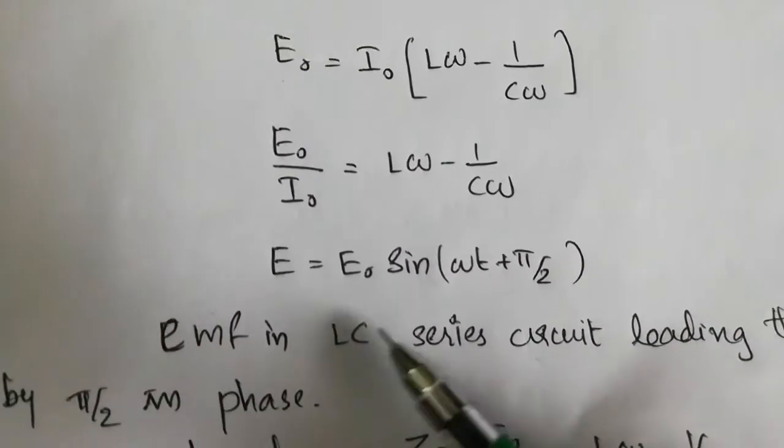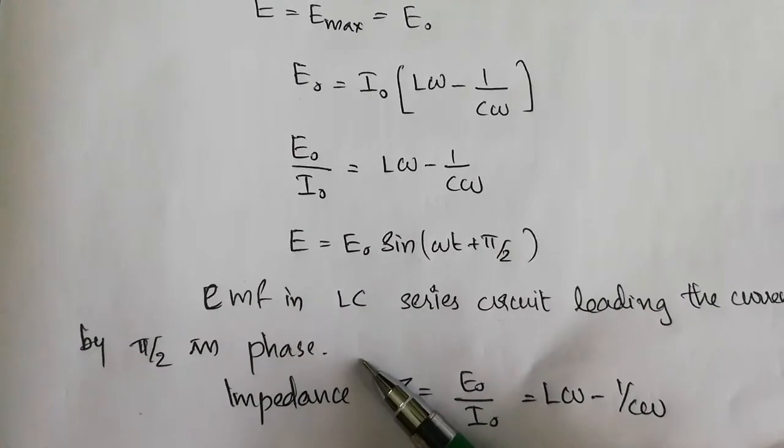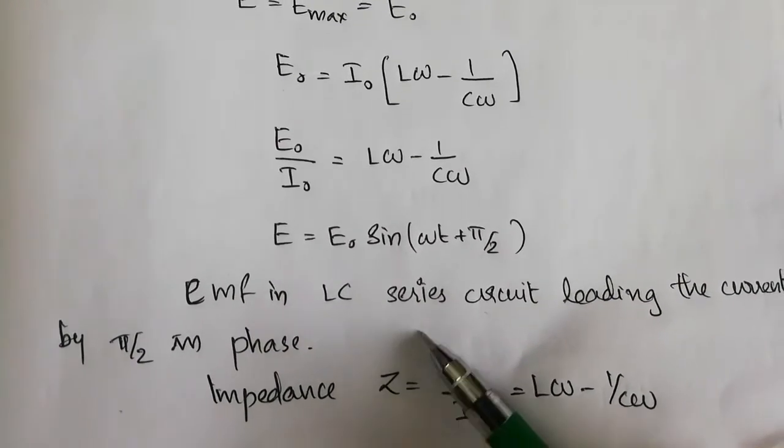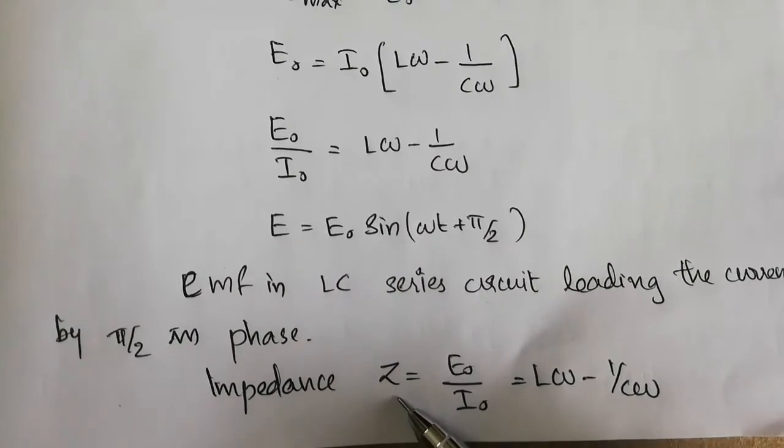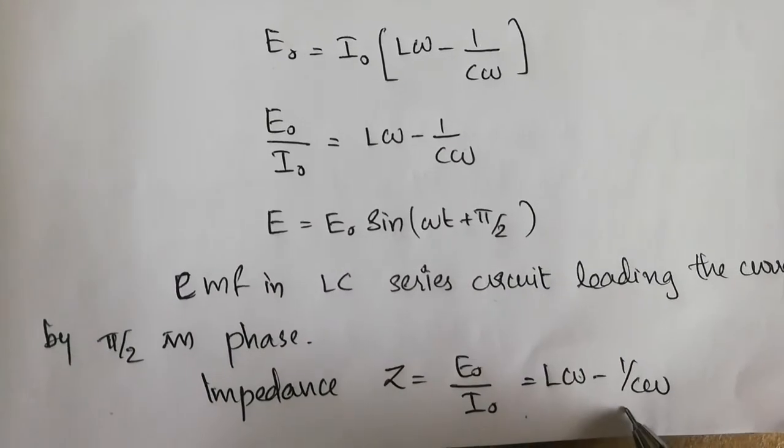So, EMF in the LC series circuit is leading the current by an angle pi by 2 in phase, and the impedance Z equals E0 by I0, which equals L omega minus 1 by C omega.